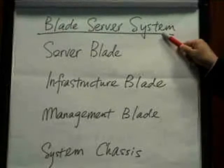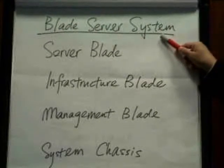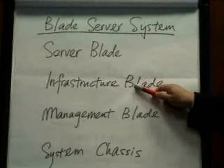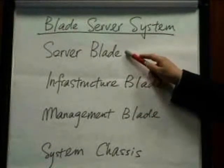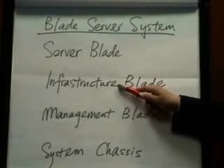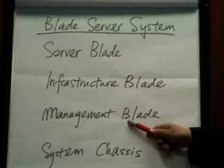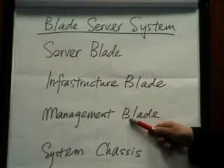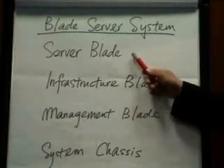For the Blade Server System, it is the most recent type of server. There are four basic components: Server Blade, Infrastructure Blade, Management Blade, and System Chassis. Each Server Blade is a physical server, and the Infrastructure Blade is used for the external network and storage connection. The Management Blade is used for control and monitoring. The System Chassis is used to house all the above three types of Blade.